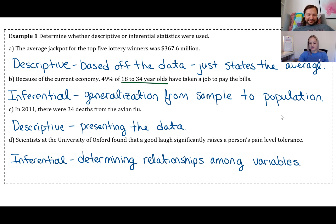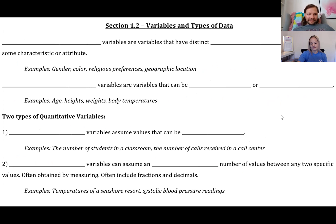Finally, scientists at the University of Oxford found that a good laugh significantly raises a person's pain level tolerance. That would definitely be inferential. You're determining the relationship between laughing and pain tolerance, so that would be determining relationships among variables. Basically for descriptive and inferential, I would say that descriptive is just more factual, just looking at the data in a very straightforward way and just reporting different aspects of that data. Whereas inferential, you're using your brain a little bit more to actually determine something or state what you think might be happening, something a little bit less factual.